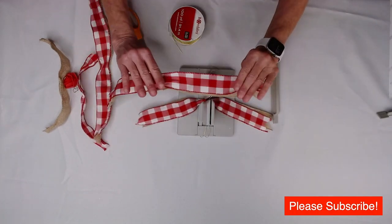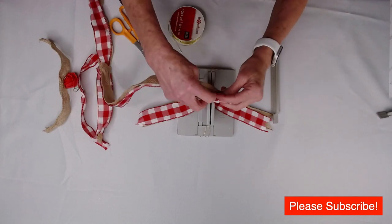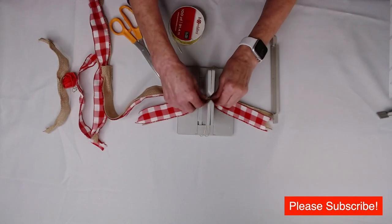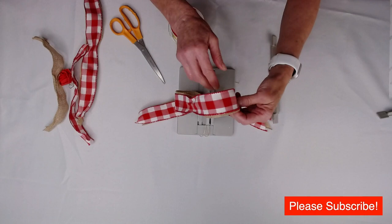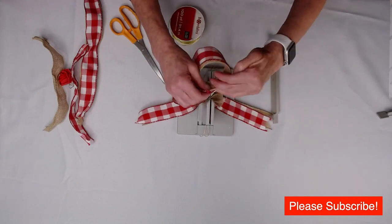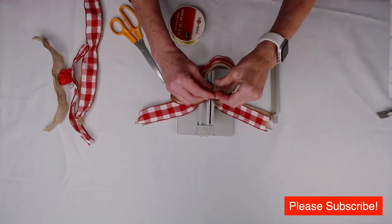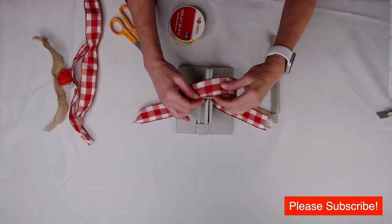Then I'm going to take this piece here, take the right side, put that down into my Bowdabra, fold it over and again take the right side, which I'm considering the red ribbon, and scrunch that in.